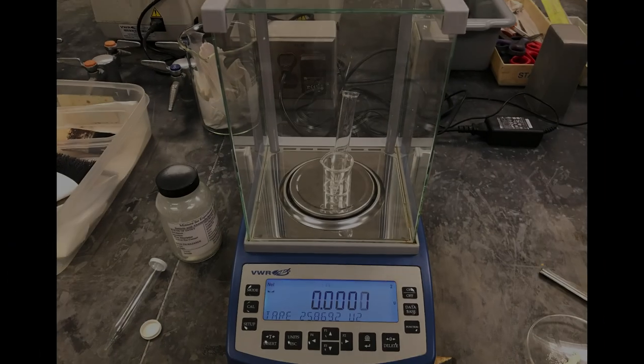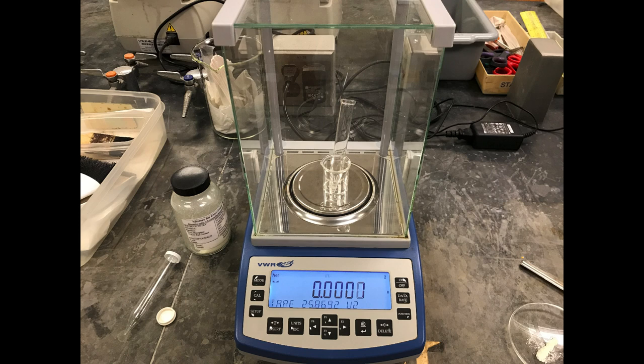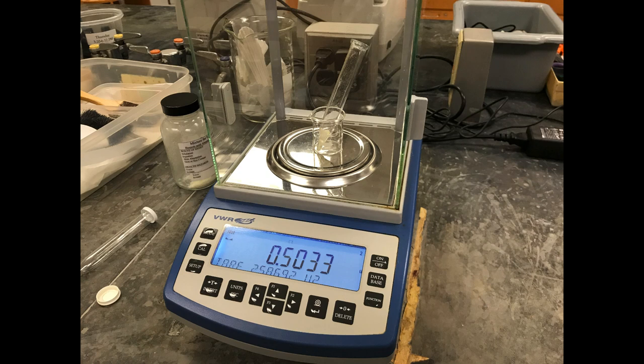We start by taring or zeroing a centrifuge tube that is held up within a beaker. We weigh out approximately 0.5 grams of the mixture containing all three compounds. Always record the exact mass of measured materials out to the fourth decimal place.